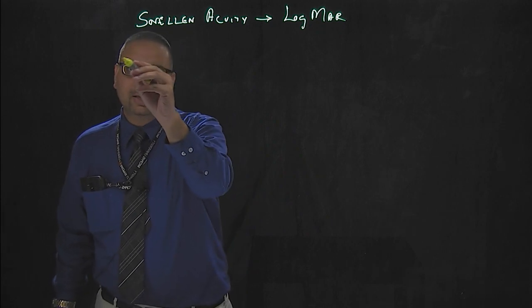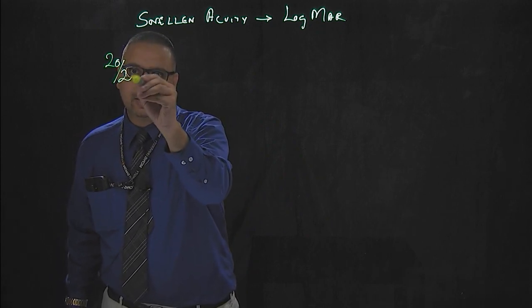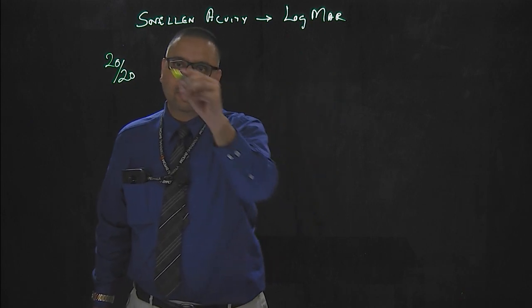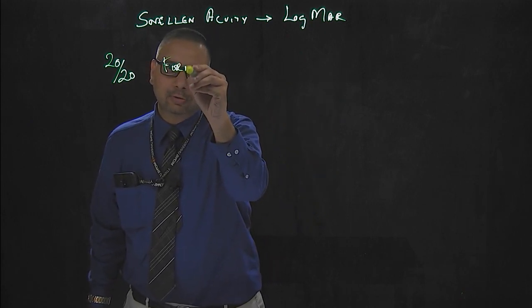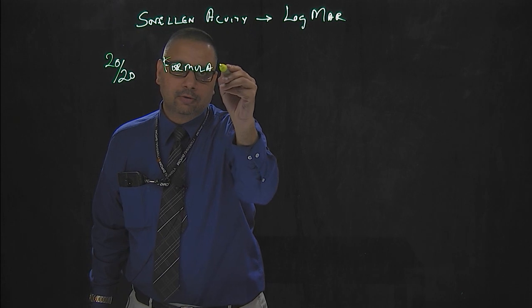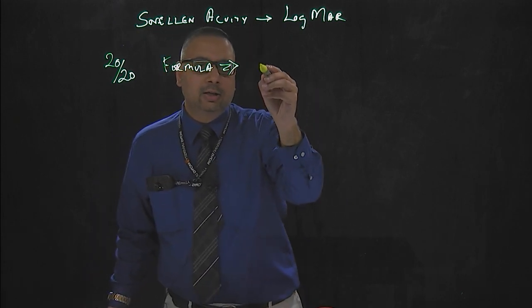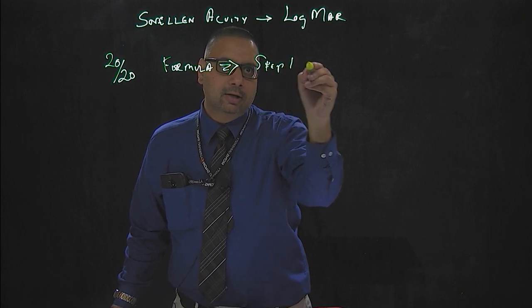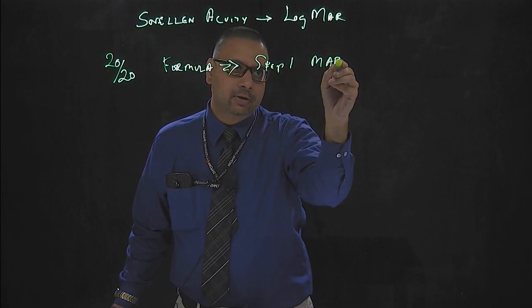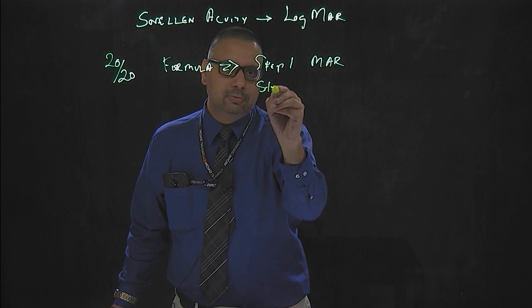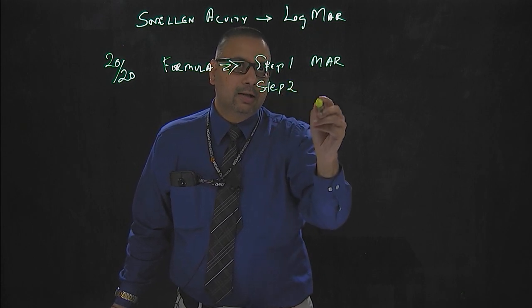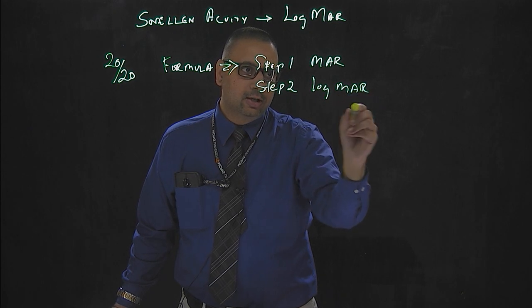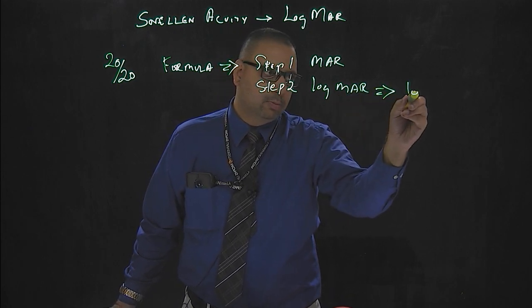Let's say a patient's Snellen acuity is 20/20 and you want that to be converted into log MAR. The formula for that is: Step 1, you calculate MAR. Step 2, you calculate log of MAR. You essentially end up getting the log MAR value.